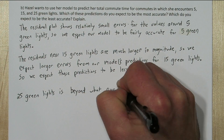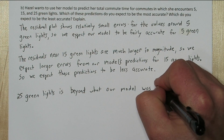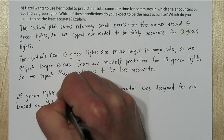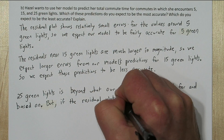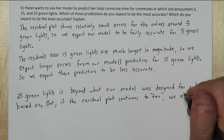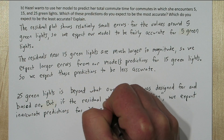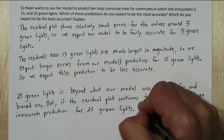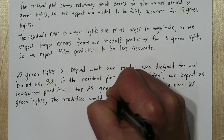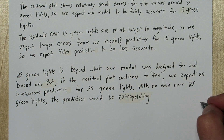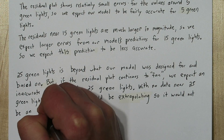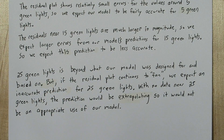25 green lights is beyond what our model was designed for and based on, but if the residual plot continues to fan, we expect an inaccurate prediction for 25 green lights. With no data near 25 green lights, the prediction would be extrapolation anyways, so it wouldn't be an appropriate use of our model.